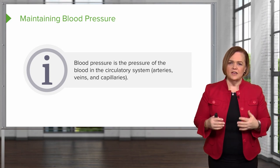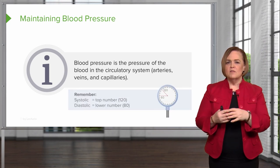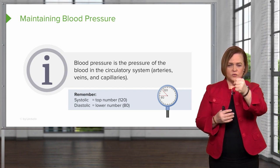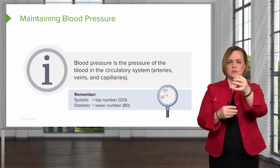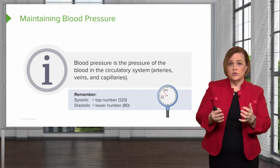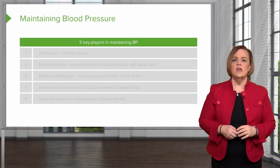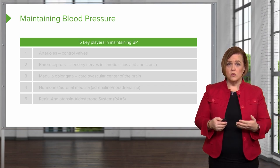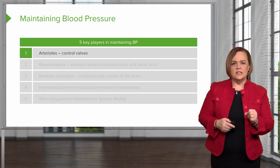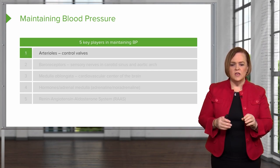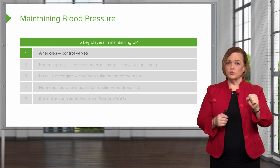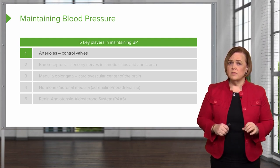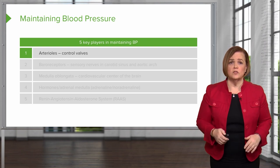Now let's look at the five key players in your body for maintaining a normal, adequate blood pressure. Number one are the arterioles — they're kind of like the control valves. If we can impact those arteriolar valves, we can have a really significant impact on blood pressure. Think of them as the control valves for maintaining a certain level of pressure in your system.